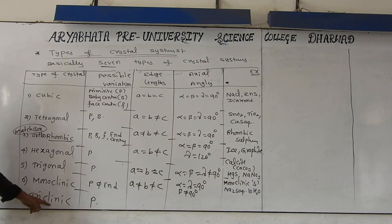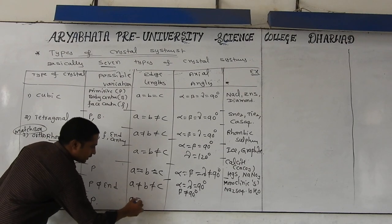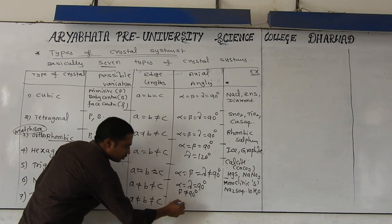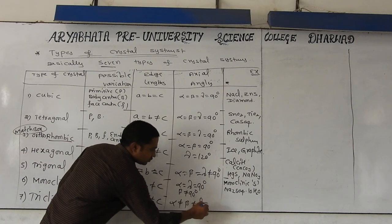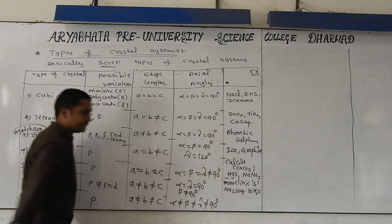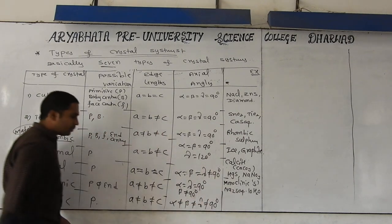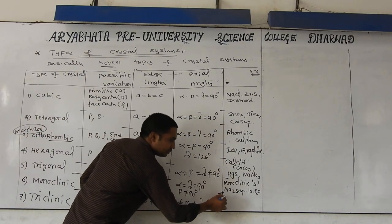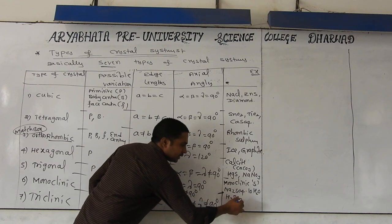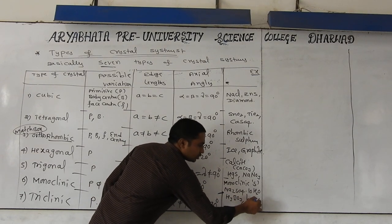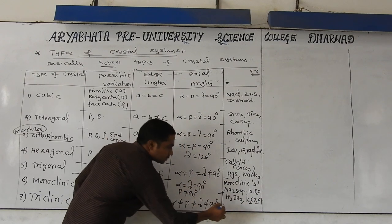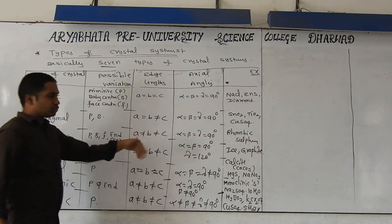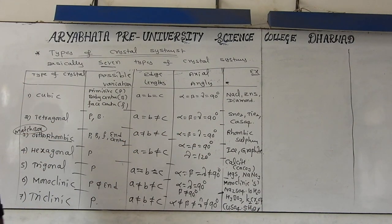The last one is triclinic. Here all edges are different: a ≠ b ≠ c, and all angles are also not equal — alpha ≠ beta ≠ gamma ≠ 90 degrees. We get triclinic geometry. Examples for triclinic: boric acid (H₃BO₃), potassium dichromate (K₂Cr₂O₇), and hydrated copper sulfate CuSO₄·5H₂O — all of these come under triclinic crystal system.